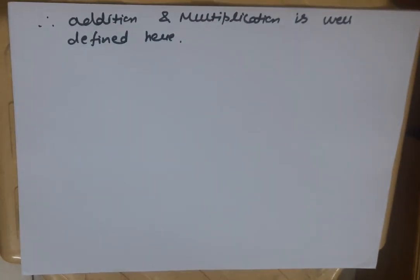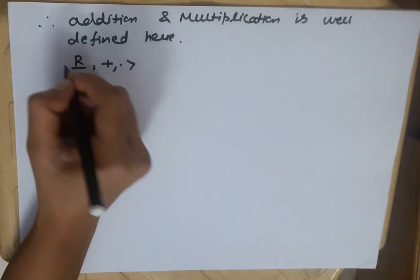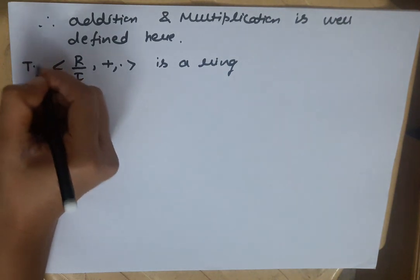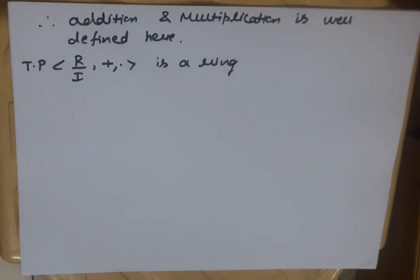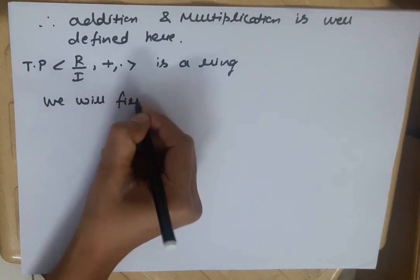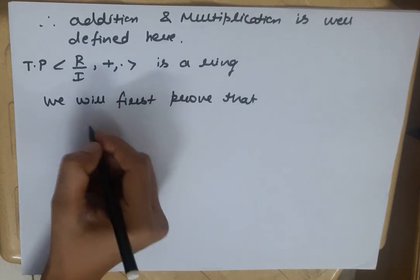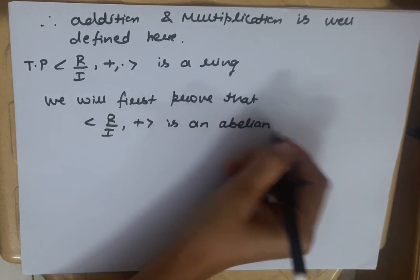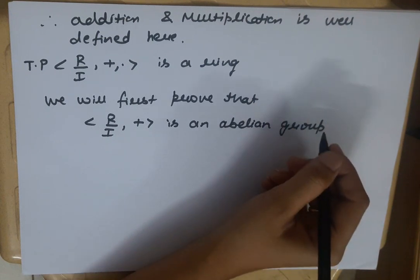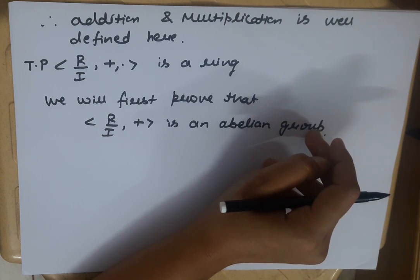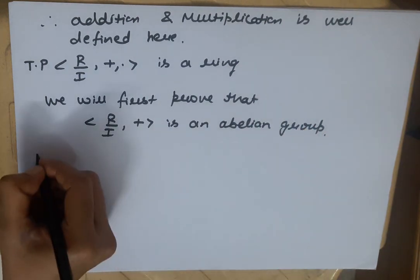अब हमें यह proof करना है कि R/I, with respect to plus and dot, एक ring बनता है। सबसे पहले हम यह prove करेंगे कि R/I with respect to addition is an abelian group. इसके लिए closure, associativity, existence of identity, and existence of additive inverse — यह चारों conditions यहाँ satisfy होनी चाहिए, और one by one हम इन्हें prove करेंगे।